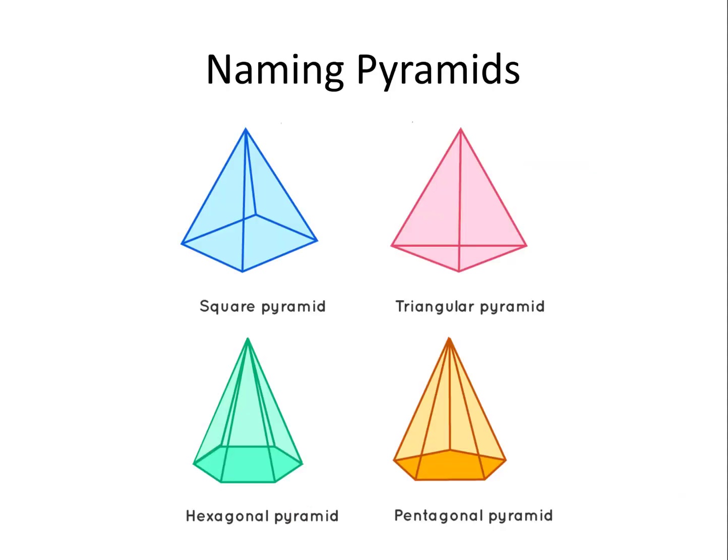Like prisms, pyramids are named according to the shape of their base. For example, square pyramid, triangular pyramid, hexagonal pyramid and pentagonal pyramid.